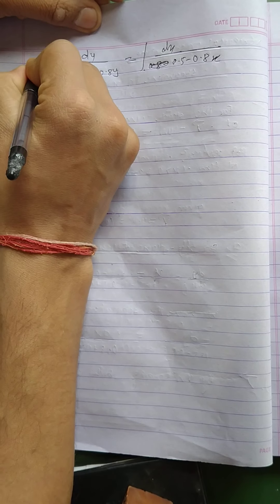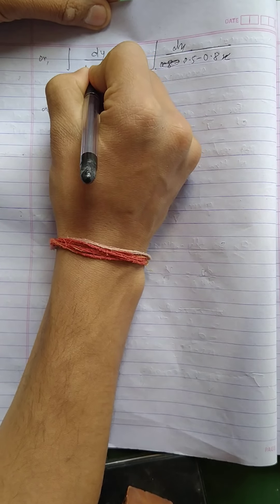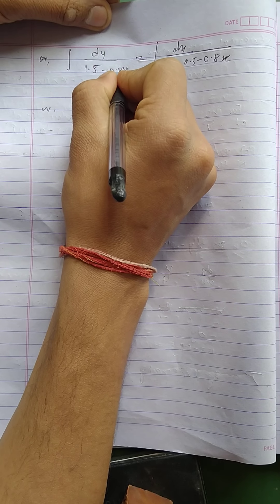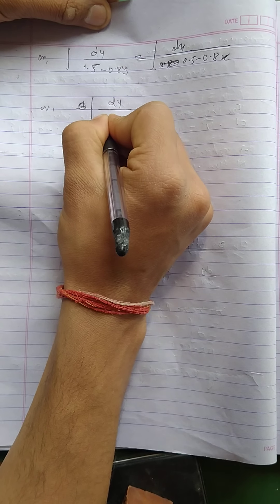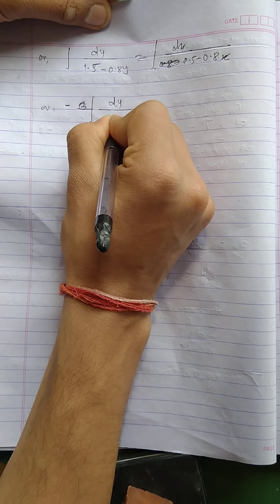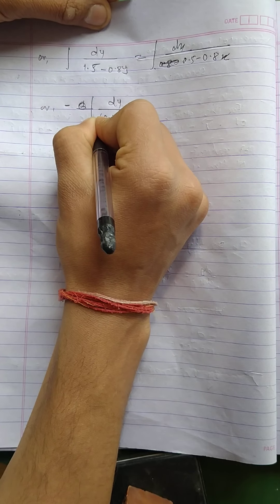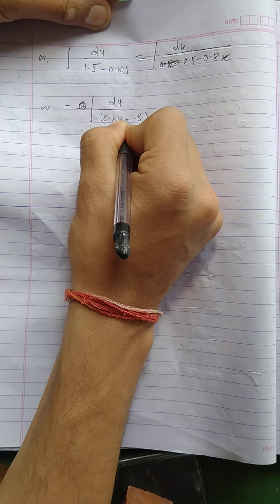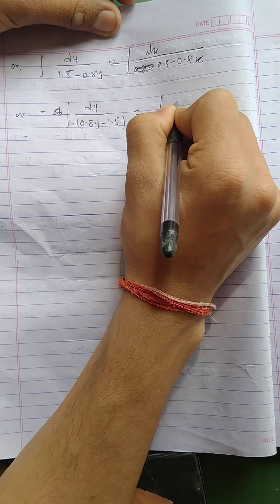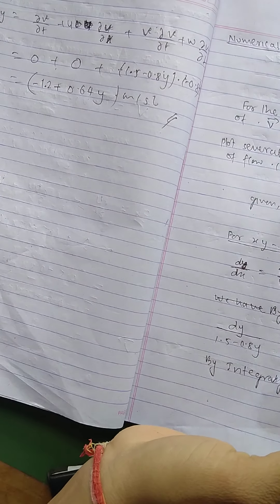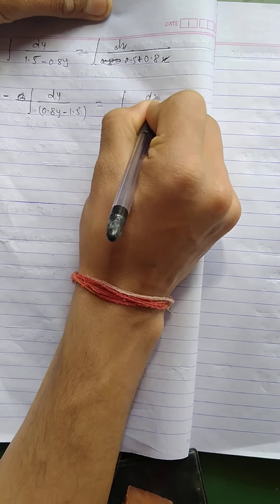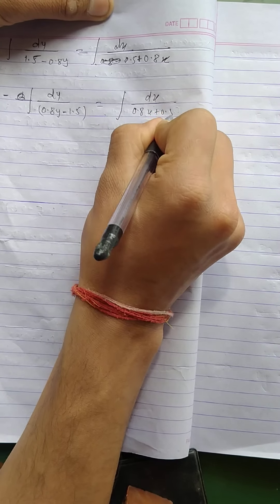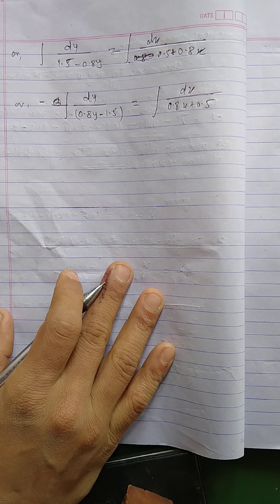Now you all know that how to integrate this type of function. This will yield the result. First of all, you have to just write in standard way. I will write minus 0.8y minus 1.5. If you take common minus, it will be here and it becomes minus plus minus equals to here, dx by 0.8x plus 0.5. No problem till now, we just only rearranged to make you understand.